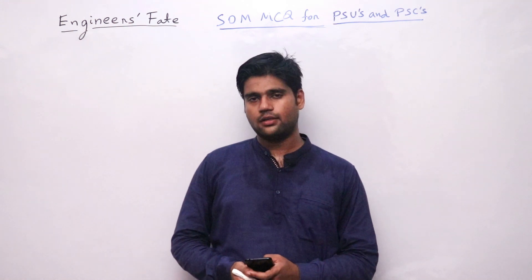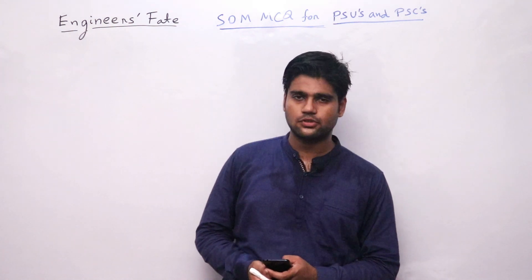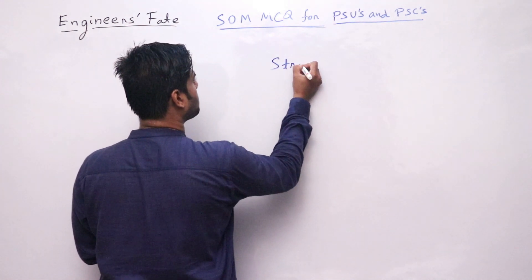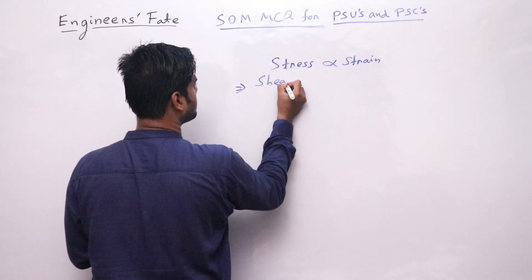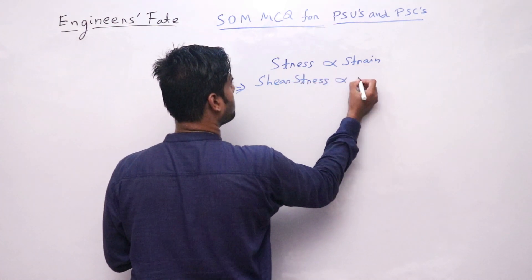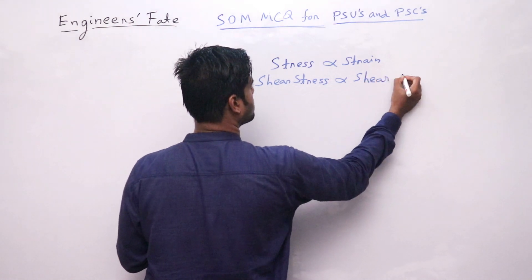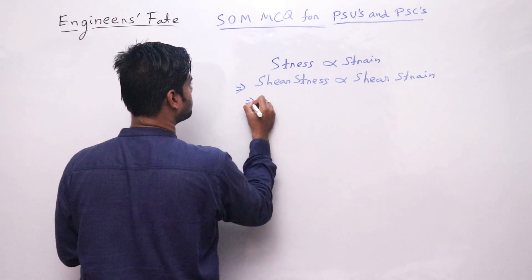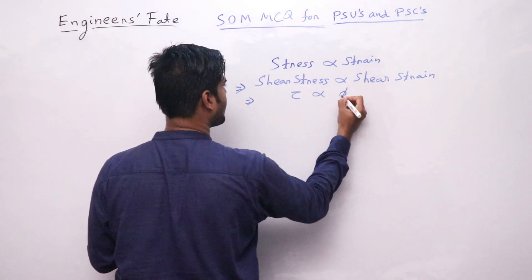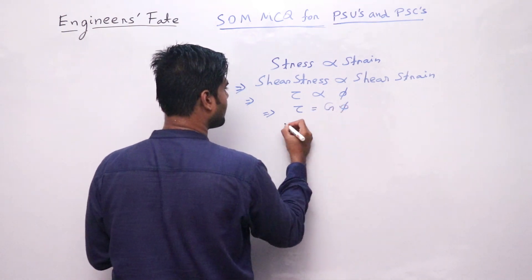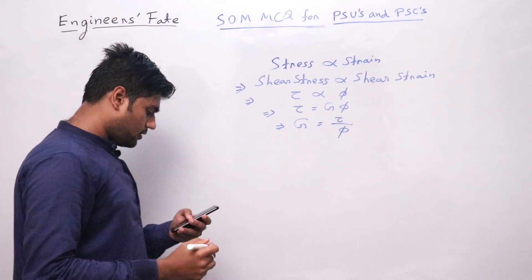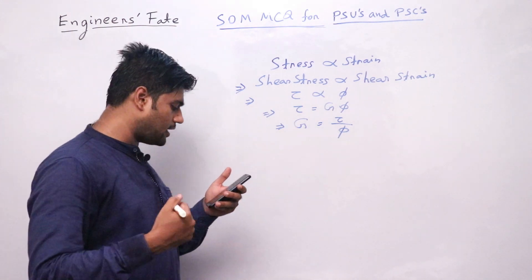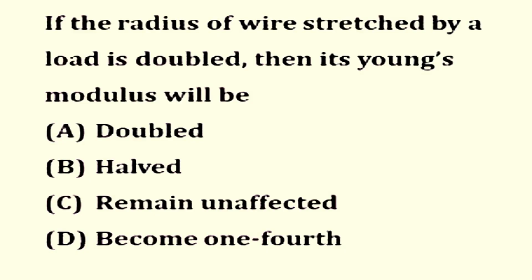If stress is proportional to strain, then shear stress will also be proportional to shear strain. Shear stress tau is proportional to shear strain phi, and tau equals G into phi. The modulus of rigidity G equals tau divided by phi. So modulus of rigidity is defined as the ratio of shear stress to shear strain — option C.